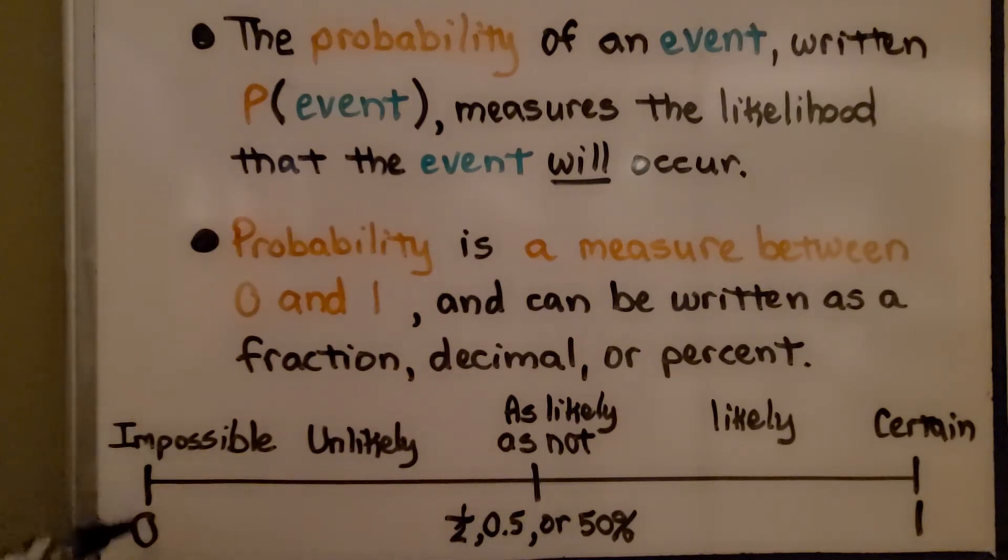Here, the event would be impossible at zero. There's no way it's going to happen. In the middle, it's as likely as not likely, a 50-50 chance. Over here at one, it's most definitely certain it will happen.